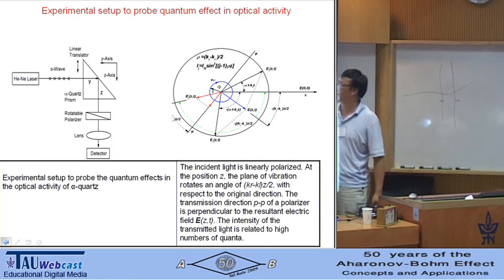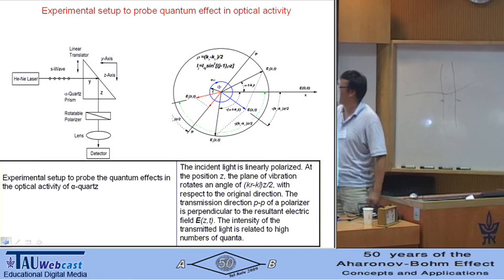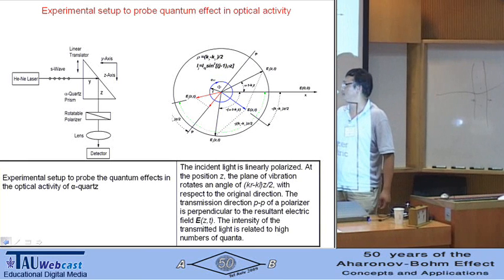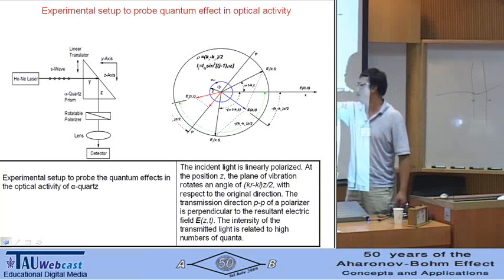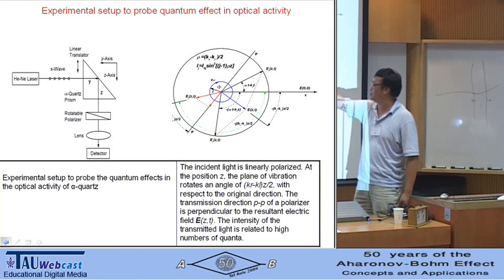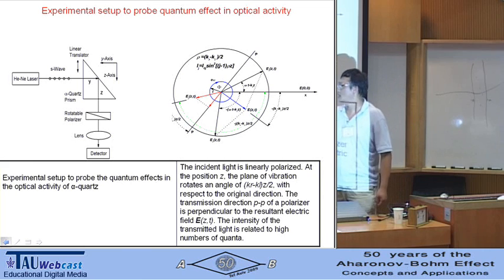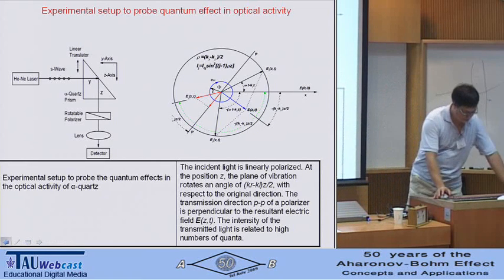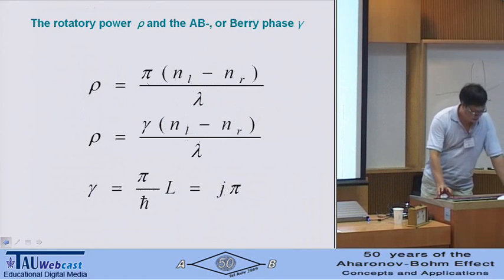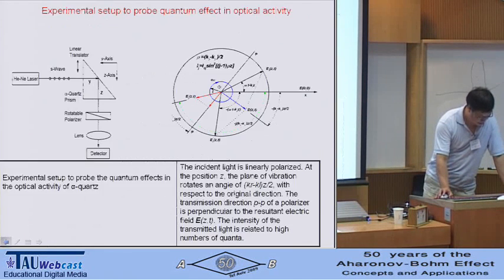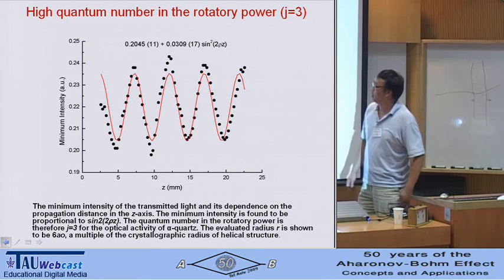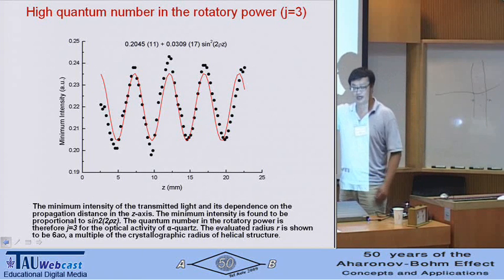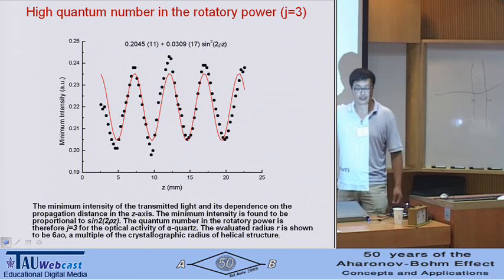We may probe the higher quantum numbers. We propose this experimental setup to probe the quantum effect in alpha quartz, where the minimum intensity is a function of the quantum effect. This is the experimental result of the minimum intensity as a function of the optical phase, i.e., the propagation phase along the direction of the optical axis.